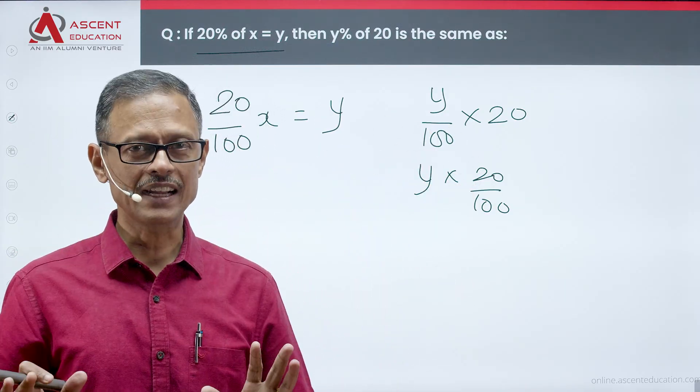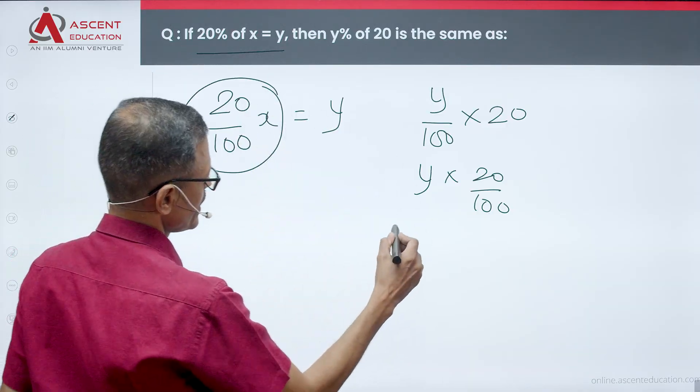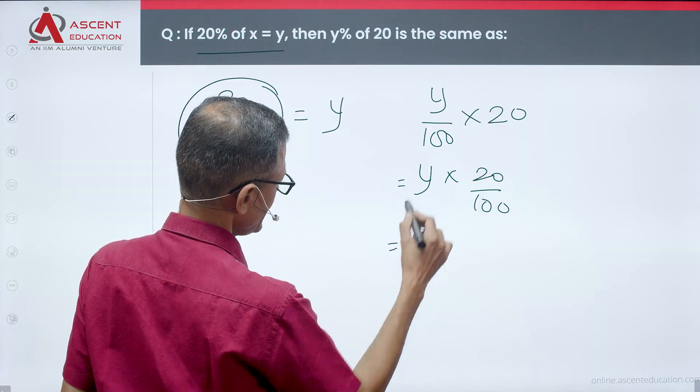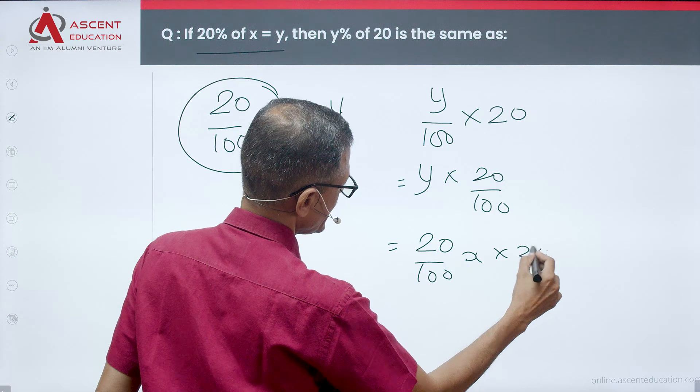So y into 20/100. Y is what we know is 20/100 x. So this 20/100 x is equal to y, we'll write it as 20/100 x into 20/100.